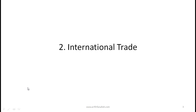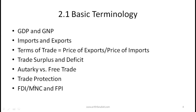Let's start with international trade and, as always, we will simply follow the curriculum. Basic terminology — most terms here you hopefully know. GDP, as we have discussed in earlier classes, is gross domestic product. This is a geographical measure of the final value of goods and services produced by a country, and it also represents the overall income of a country.